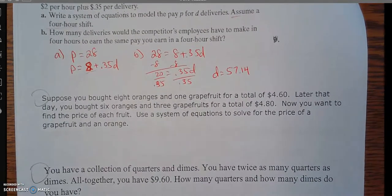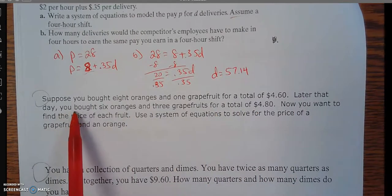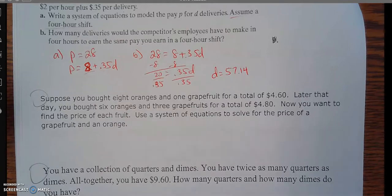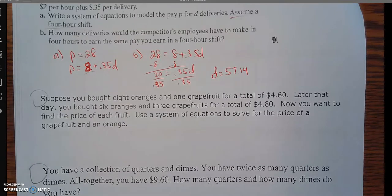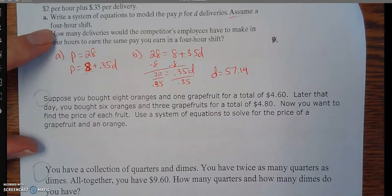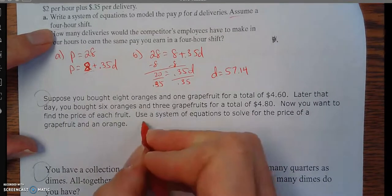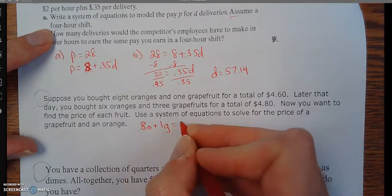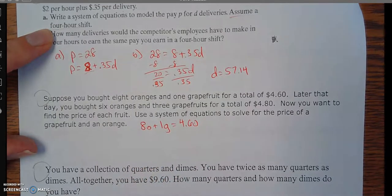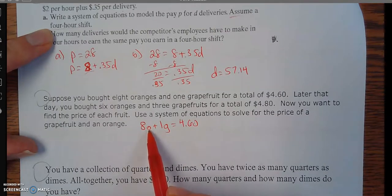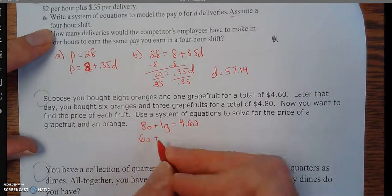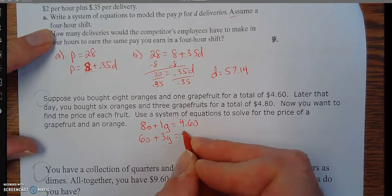Number two, suppose you bought eight oranges and one grapefruit for $4.60. Later, you went back and you bought six oranges and three grapefruit for $4.80. You lost your receipts, and you want to find what the prices were for each of them. Maybe a friend asked, hey, how much does that orange cost? Or how much does the grapefruit cost? So you got to go back and do a little math. This happens all the time to you, I'm sure, in real life. So say I got eight oranges, and we'll put a lowercase o for oranges, plus one grapefruit. You add them together, you get $4.60. In this one, o would represent the cost of an orange, and g represents the cost of a grapefruit. Later on, you went back, you got six oranges and three grapefruit, and that costs you $4.80.